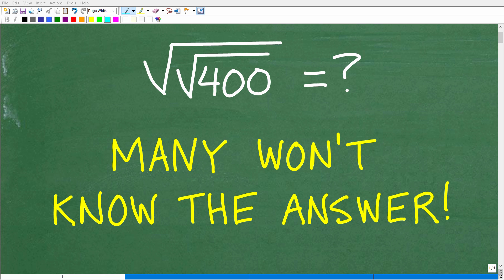Okay, so a lot of people will not be able to answer this math question without using a calculator. But that doesn't mean that you can't do this problem. Matter of fact, if you know the answer, the question here is: the square root of the square root of 400. What is this equal to?